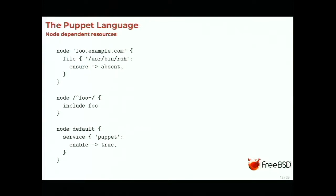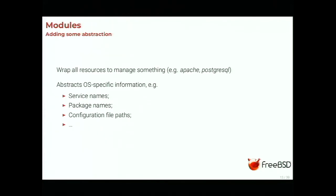This is basically what Puppet provides out of the box. Many people want to do similar things, and here come modules. Modules provide abstraction — a class containing service configuration and package for something that you can redistribute. You have Apache modules, PostgreSQL modules, etc. A neat point is that these modules abstract the OS-specific details; for example, if you configure Apache, on Debian the package is named apache2, on CentOS it might be httpd, on FreeBSD it will be apache24. These details are abstracted by the modules — you don't have to care about them.